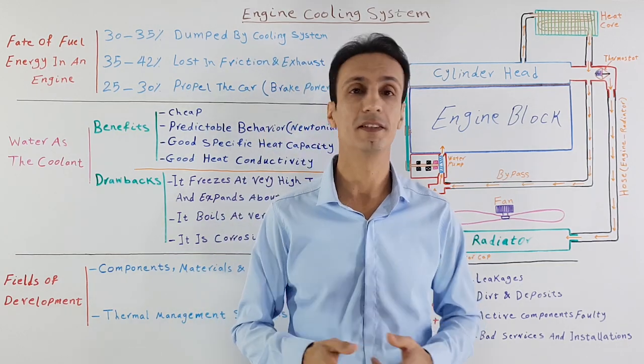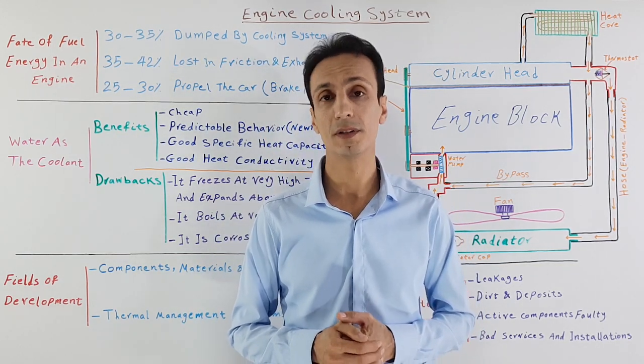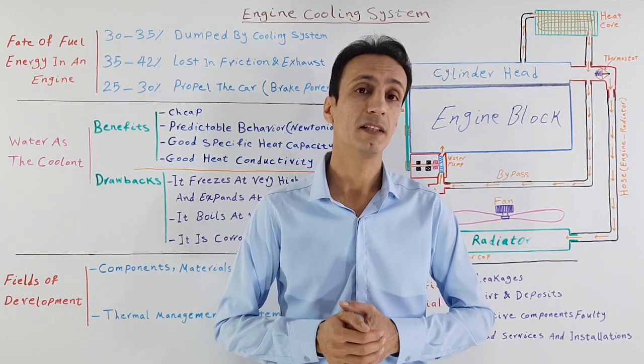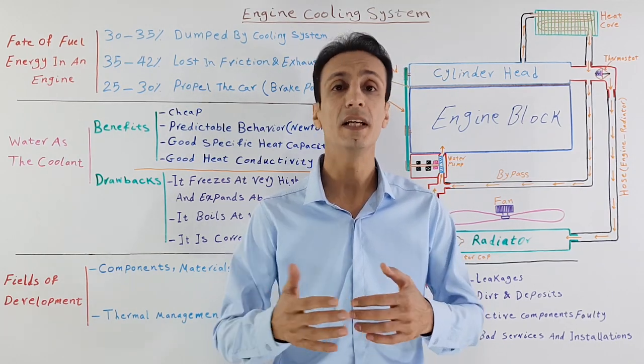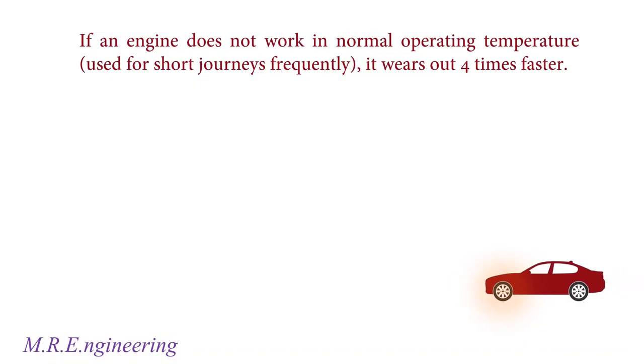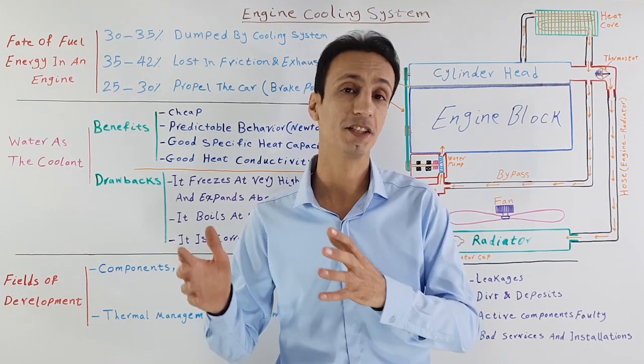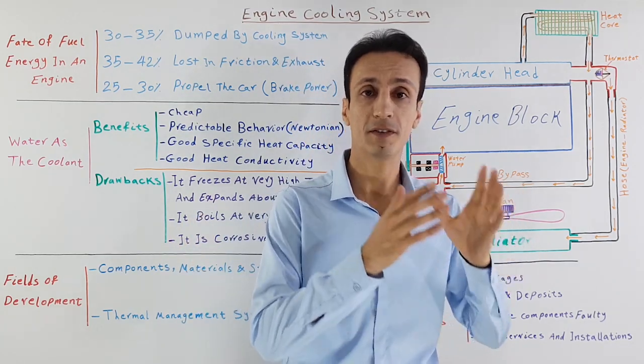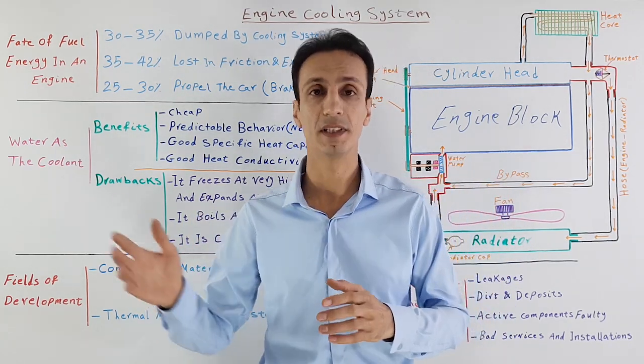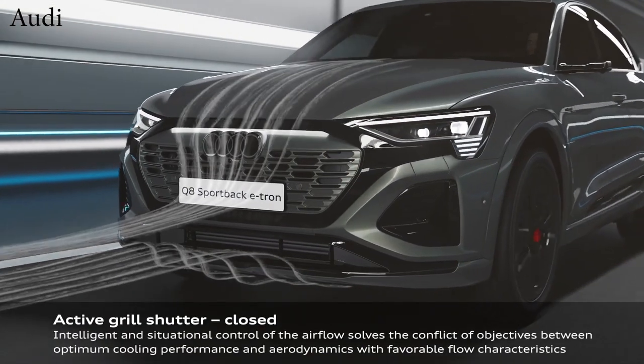Just after starting the engine when it is cold, it's very important to increase the temperature of the coolant quickly to normal operating temperature to increase fuel efficiency and control emissions. Engines wear out four times faster if they work in lower temperatures continually. To achieve this goal, designers can use heat energy of the exhaust gas in a special heat exchanger to heat the coolant or block flow of cool ambient air passing over the engine using electronically controlled grille shutters that are mainly used for improving aerodynamics.